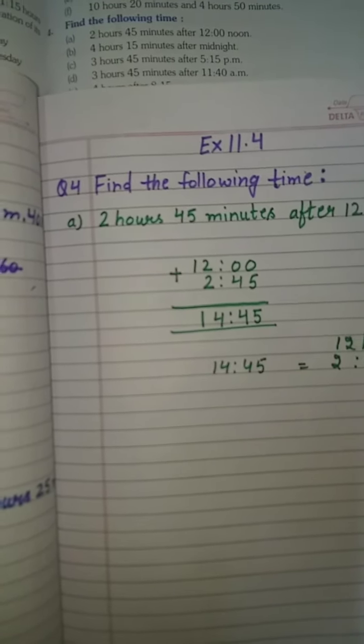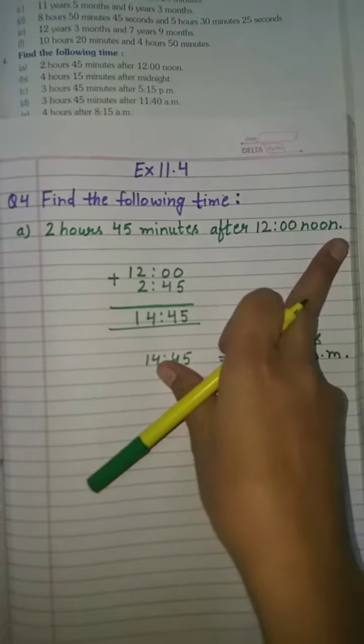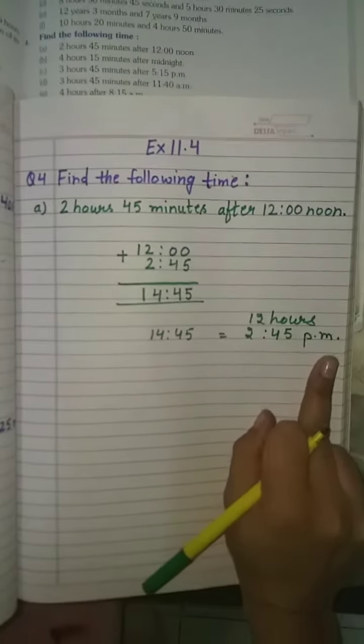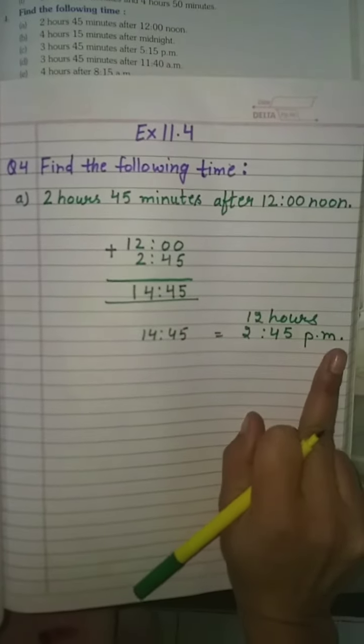Why do we write PM? We write PM because it's 12 noon, and after 12 noon is afternoon, which means PM.